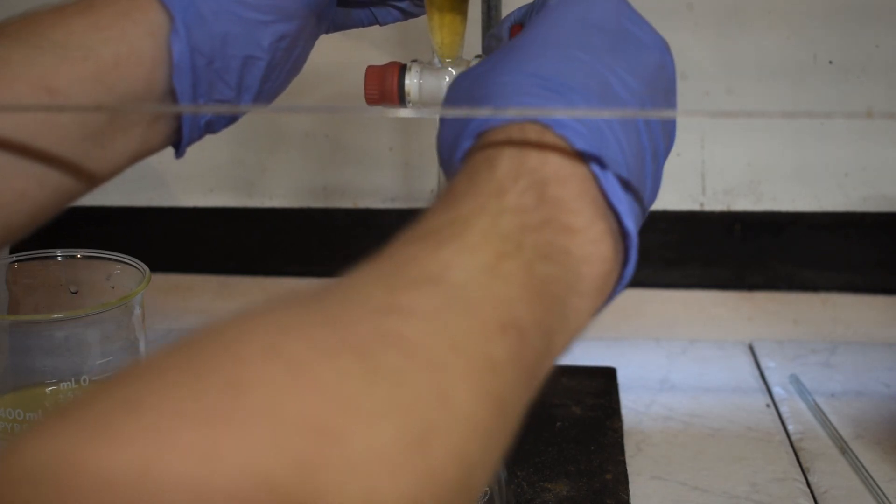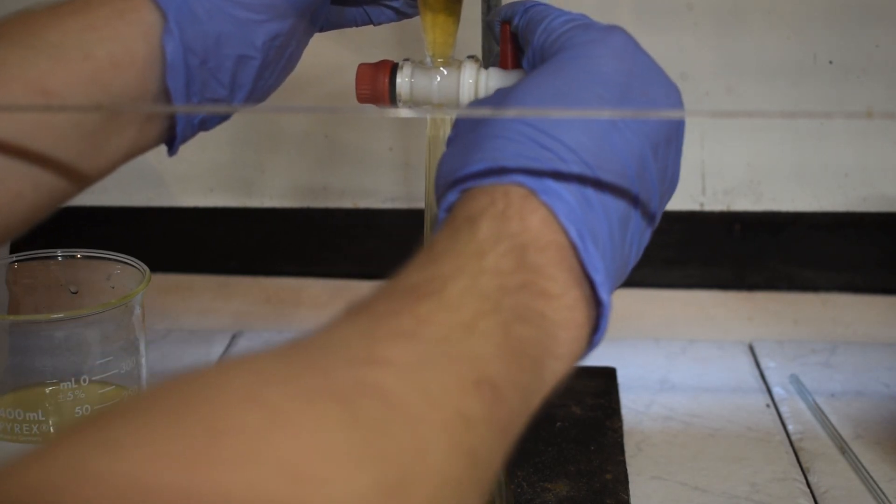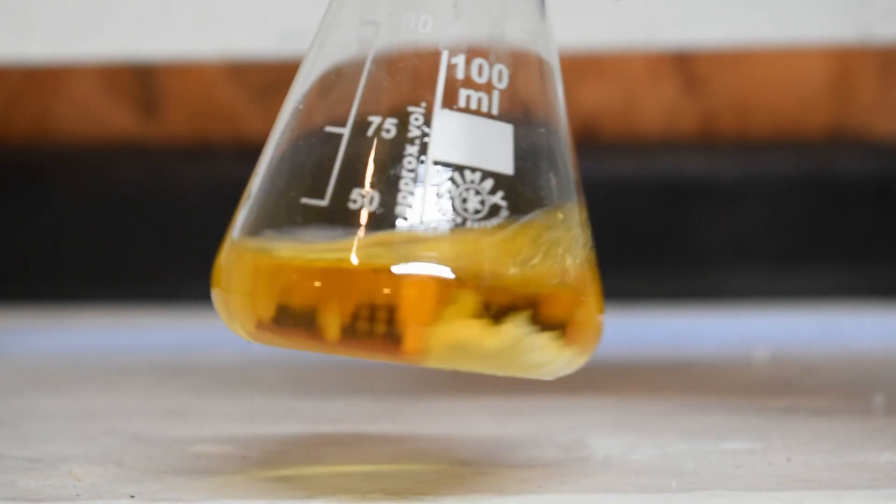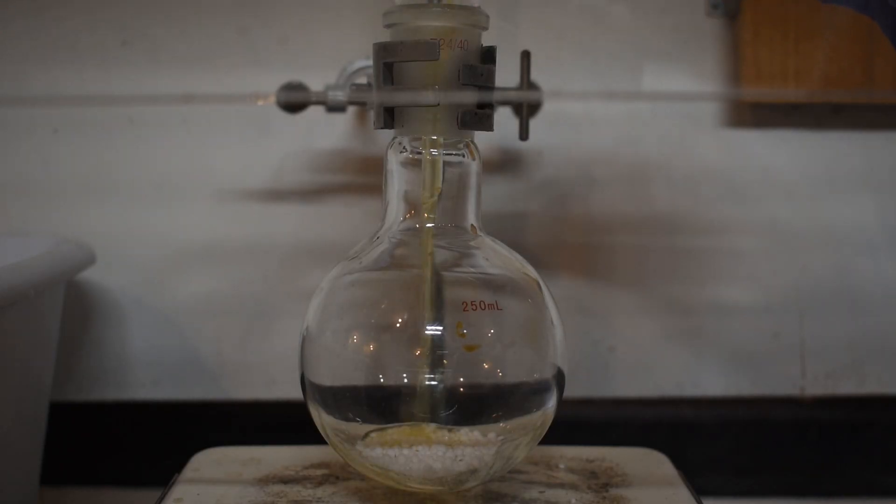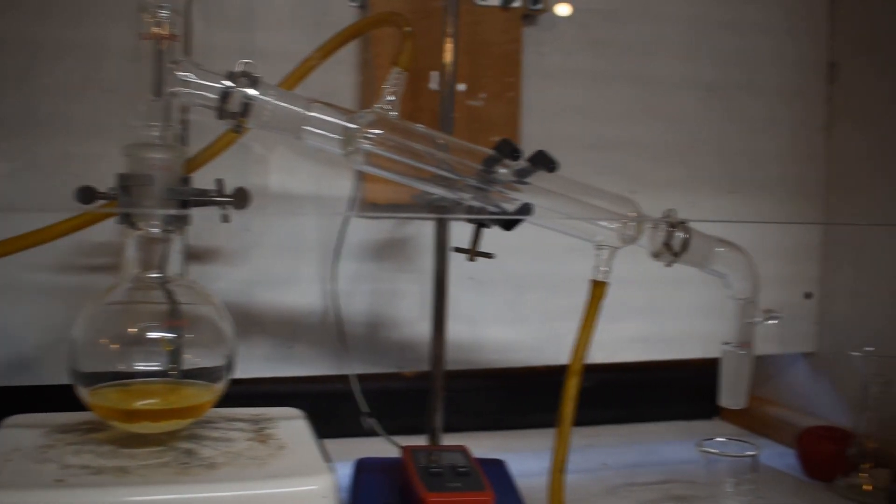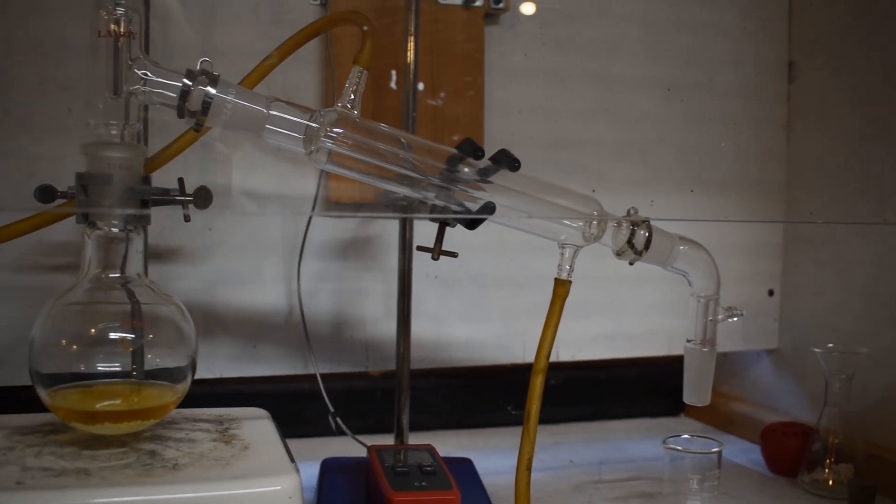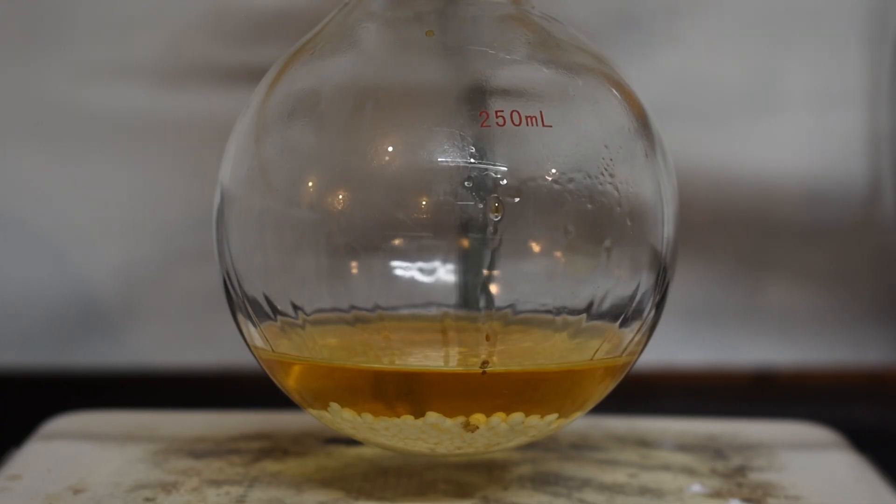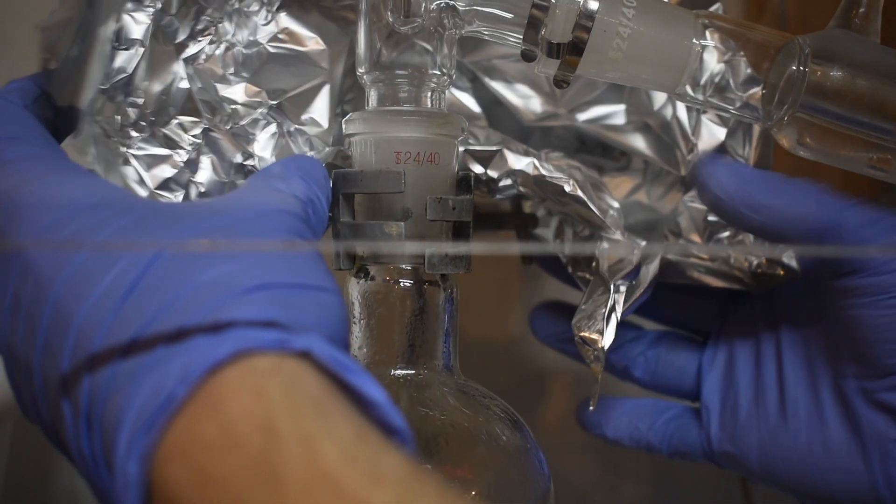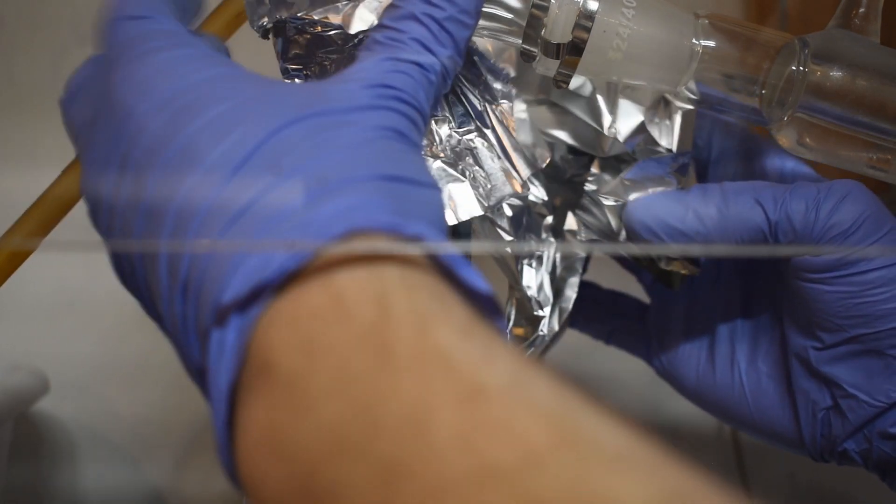I transferred our isoamyl acetate over to a small Erlenmeyer flask and then added some calcium chloride to help remove water. After this, I transferred it to another round bottom flask that also had some calcium chloride in it as well. I then set up for distillation. I covered the reaction flask and the still head in aluminum foil to help insulate some of the heat.